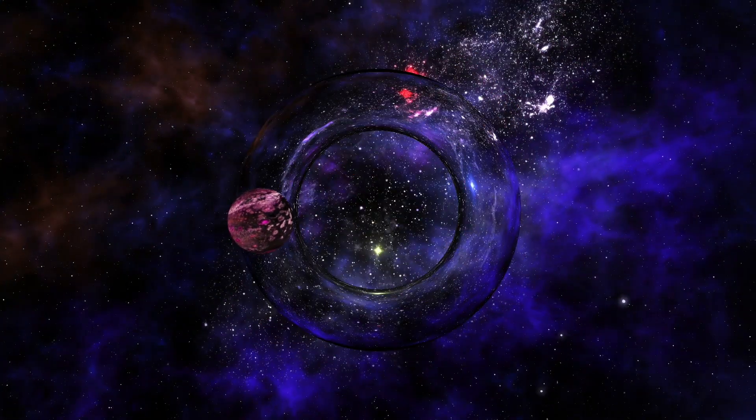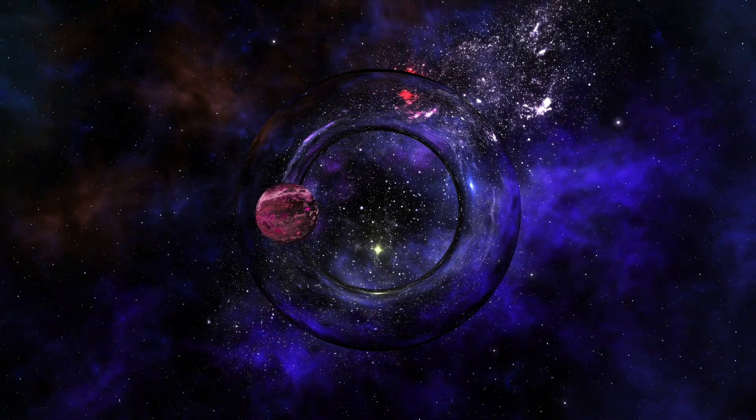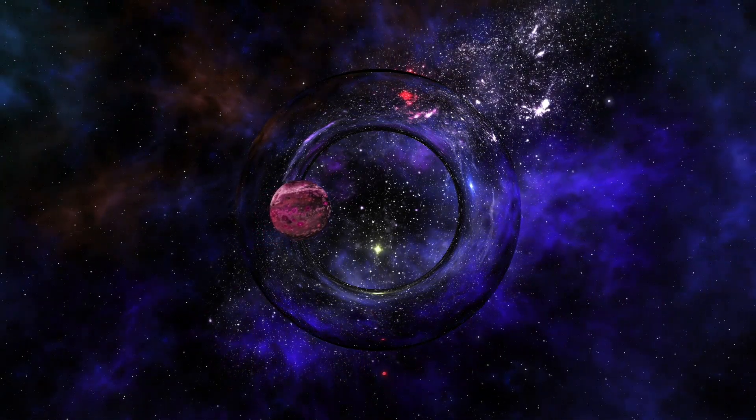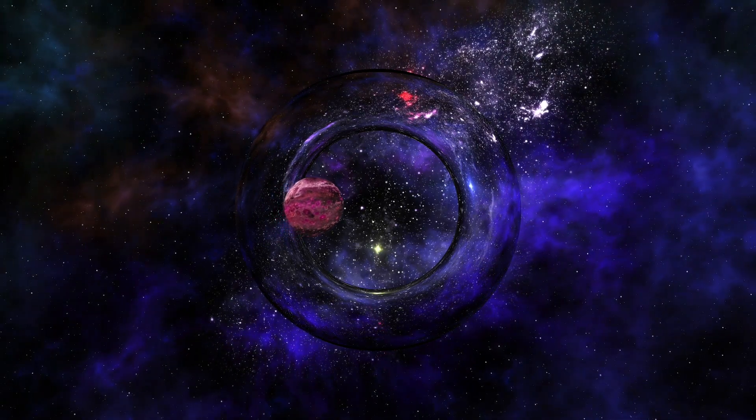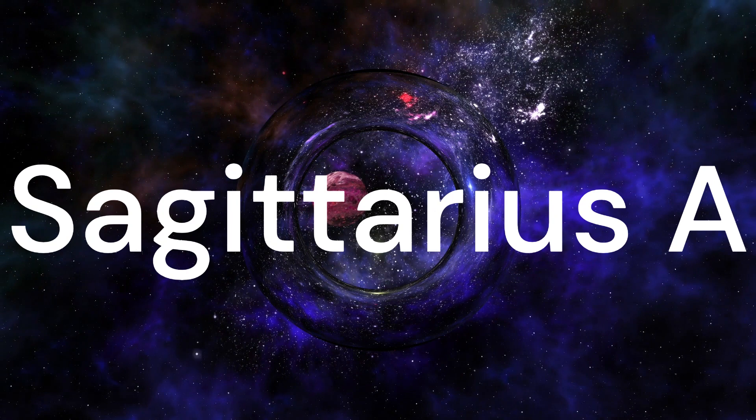One piece of evidence lies right at the center of our very own Milky Way galaxy. Astronomers have detected powerful radio emissions and observed stars orbiting an invisible object with immense mass. This observation strongly suggests the presence of a supermassive black hole called Sagittarius A star.